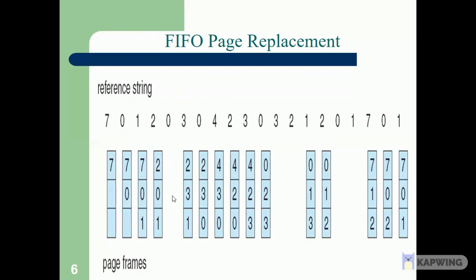For reference 2: the frame is full, so we apply FIFO — the first page inserted was 7, so 7 is replaced by 2. Page fault occurs — count is 4. For reference 0: 0 is already in the frame, no page fault. For reference 3: 3 is not in the frame, page fault occurs. We replace the next oldest, which is 0, with 3 — count is 5. For reference 0 again: 0 is not in the frame, so we replace 1 with 0 — count is 6.